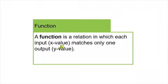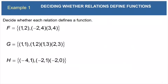And a function is a relation in which each input matches only one output. In other words, each x value matches up with only one y value. So here in example 1, it says decide whether each relation defines a function. All we have to do for each relation is make sure that each x value only matches with one y value.